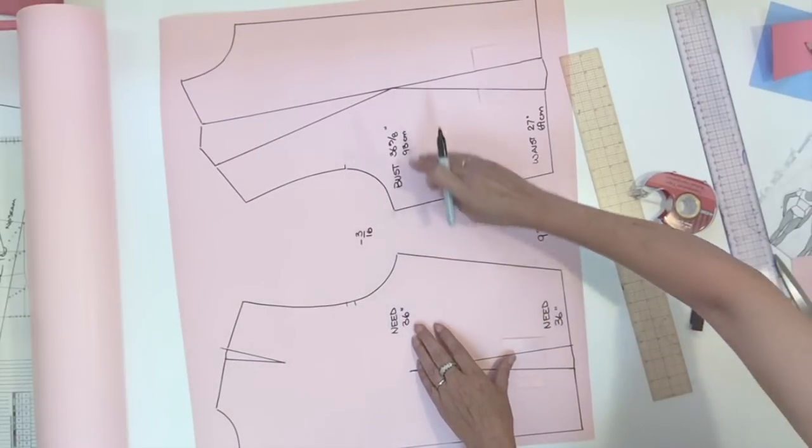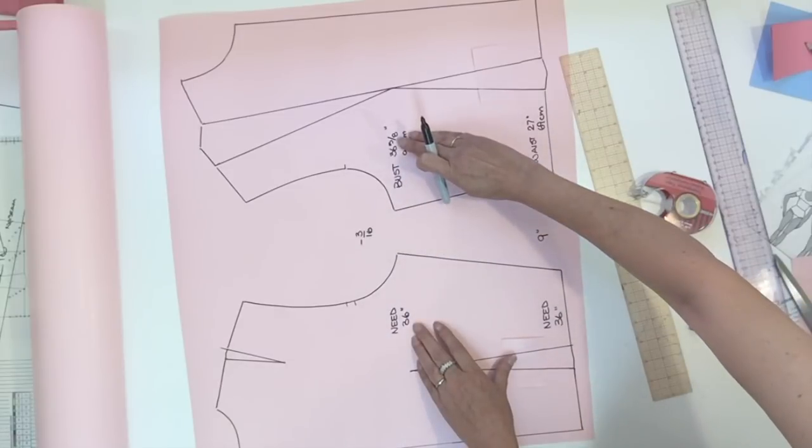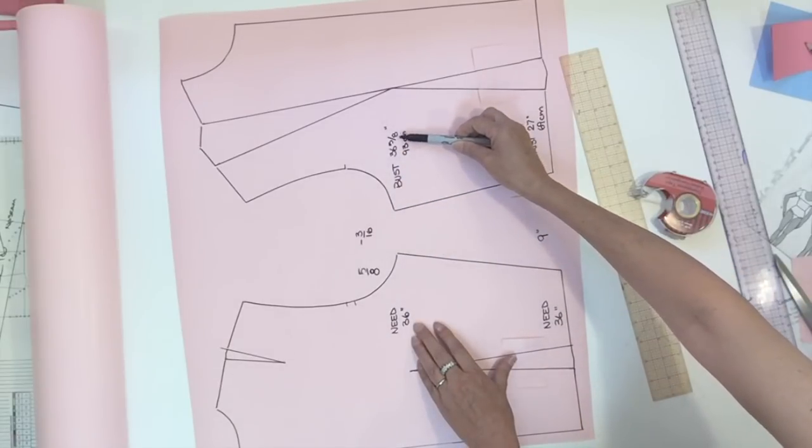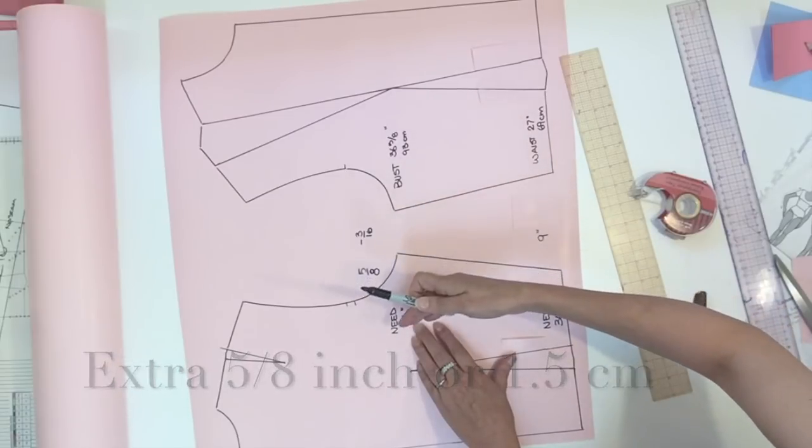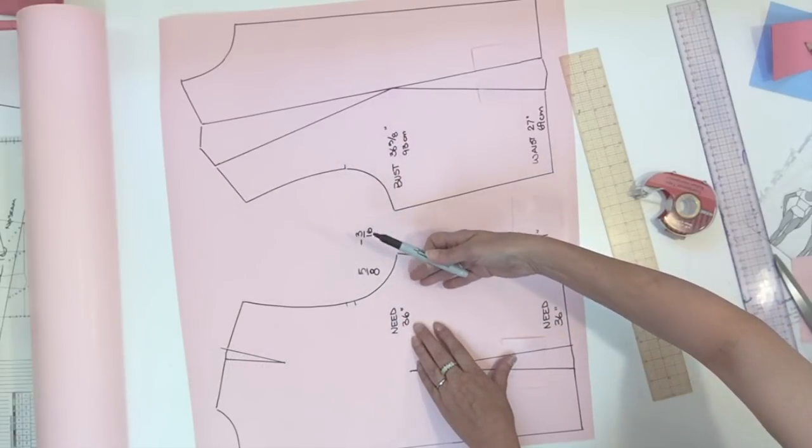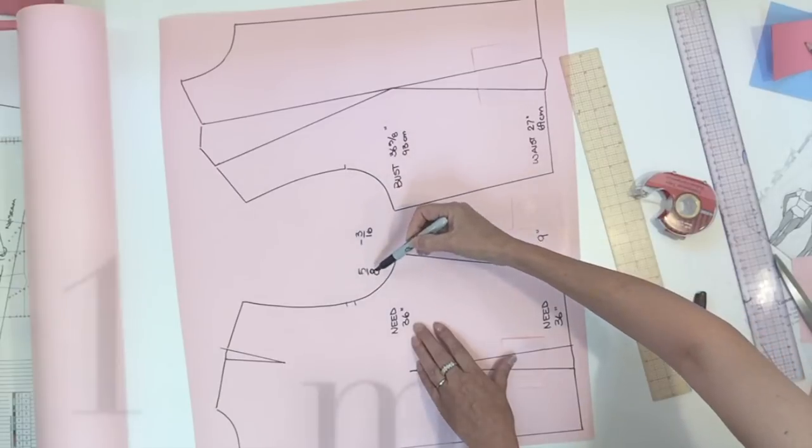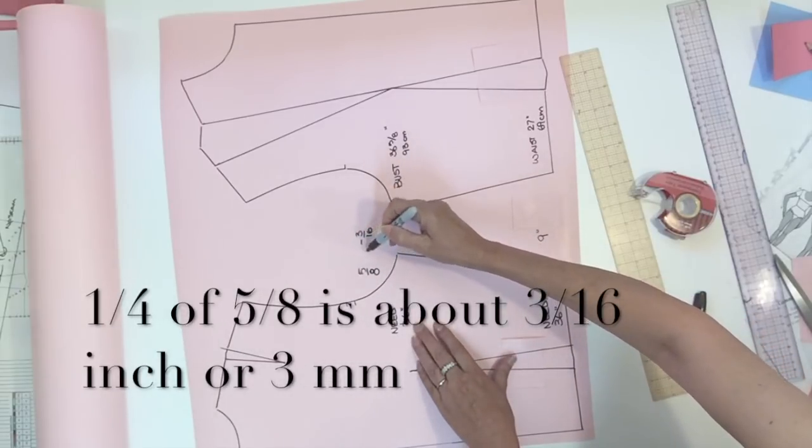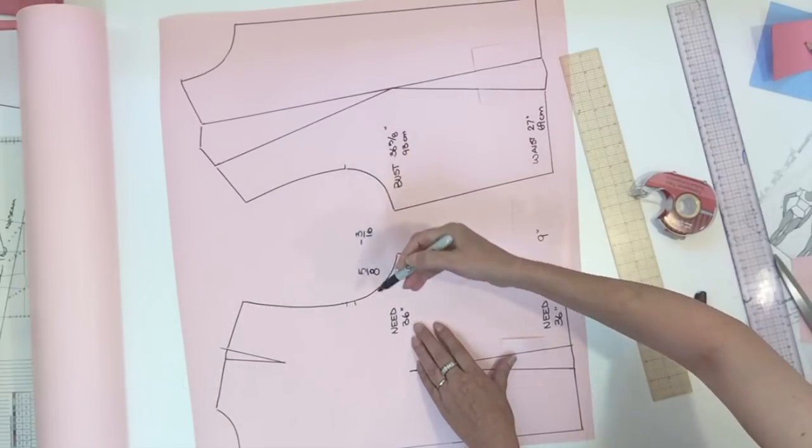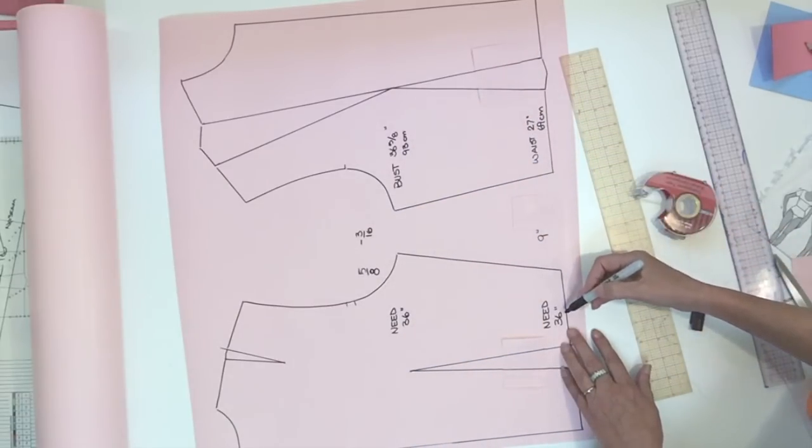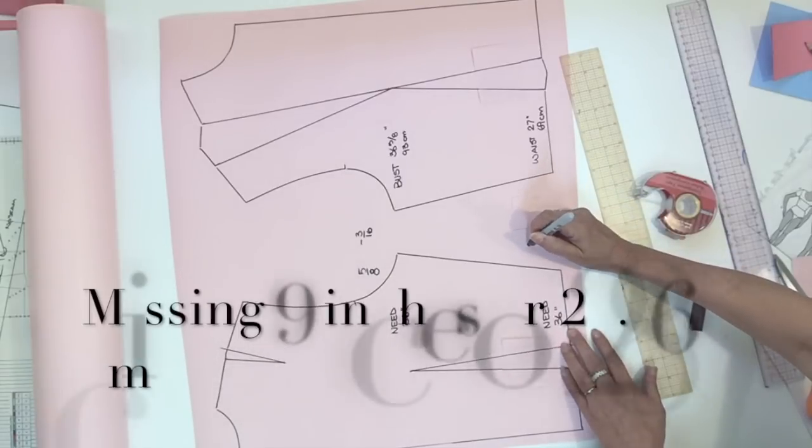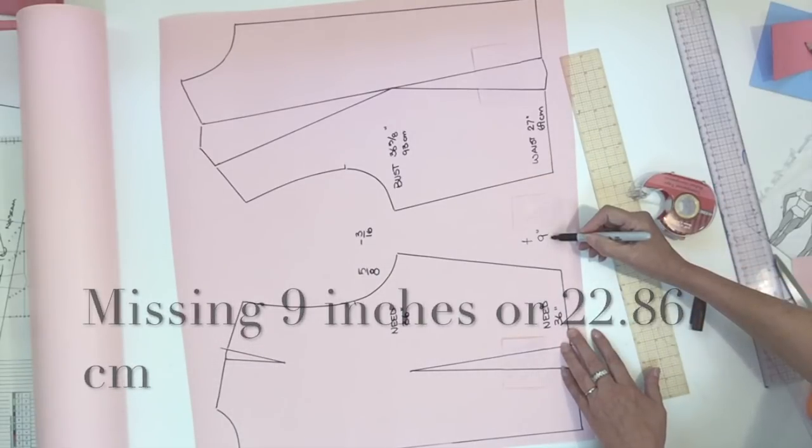So if we look at both measurements and we find the difference, we see that my block has a 5/8 extra at the bust level. So on one quarter of the pattern piece it would be one quarter of 5/8, so 3/16 to remove. While at the waist from 27 inches to 36 inches I need to enlarge 9 inches.